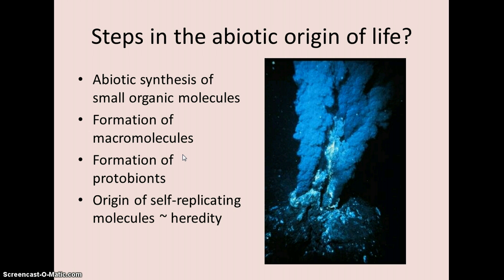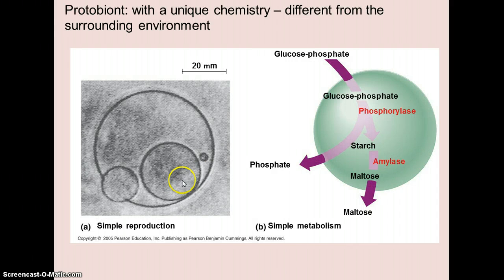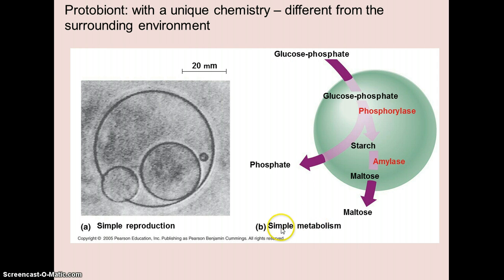The presumed origin or pattern in which this process occurred was the formation of these organic molecules and the formation of what we would call a protobiont — a sort of early type of living thing. These protobionts basically consist of a lipid ball, and that lipid ball begins to have a certain chemistry inside of it, certain processes going on that are different from the outside, and it starts to exhibit a simple kind of metabolism.